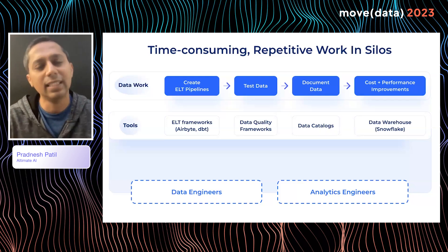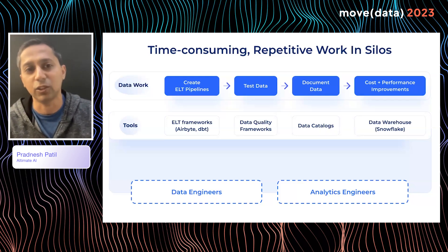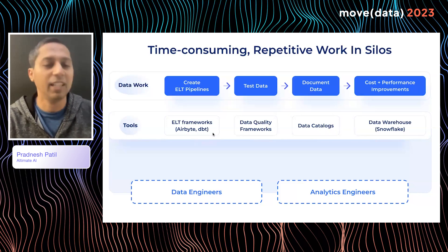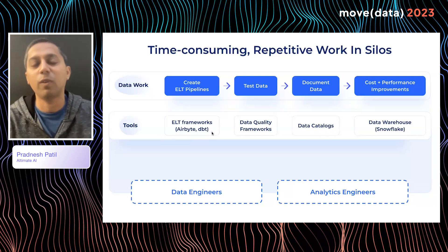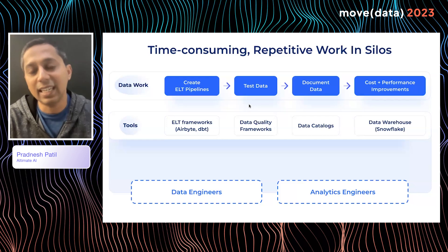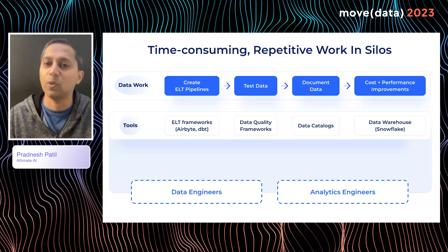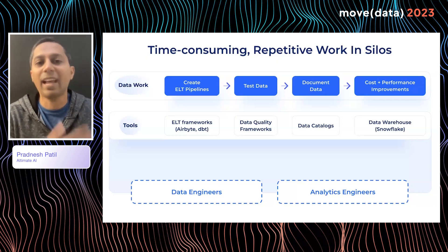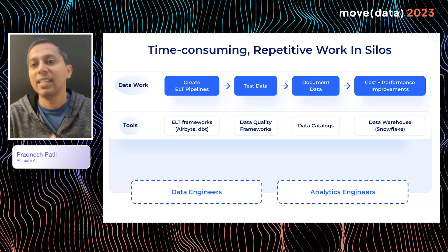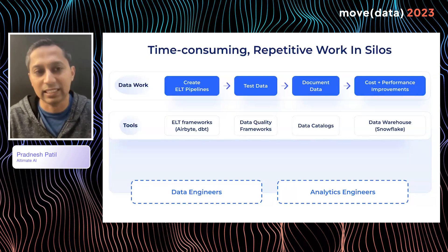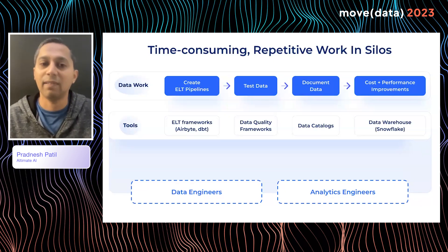If you look at the data work today — what data engineers and analytics engineers do — number one, they create ELT pipelines using tools like Airbyte for extract and load, or dbt for transformations. They write data quality tests, use data catalogs for documentation, and with today's macroeconomic environment, a lot of teams are also paying attention to saving costs in their data warehouse.